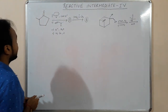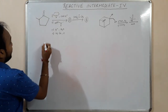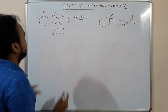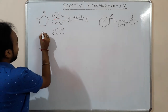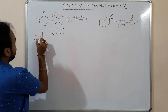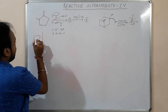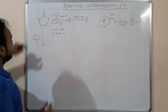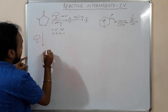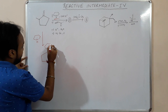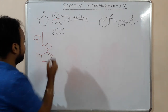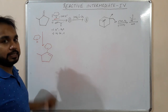We have given a ketone, and now what happens — it will form an enamine. The formation of this enamine is preferred at the less hindered side.